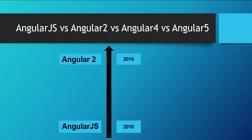AngularJS was introduced in 2010 as a JavaScript framework for building client-side applications, and it got popularity very soon. The Angular team started adding new features to the core. But the AngularJS framework was not designed with the needs of today's applications in mind, and it was a little more complex than the current version of Angular.